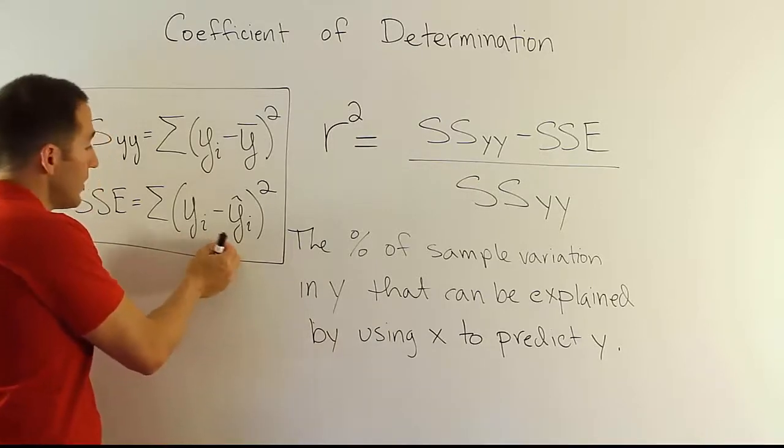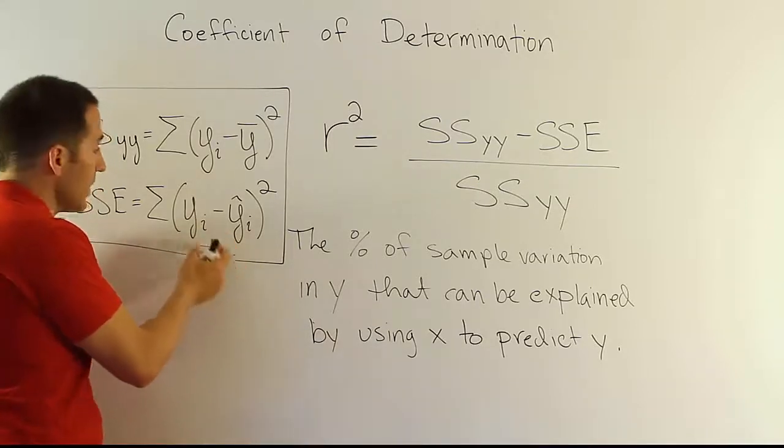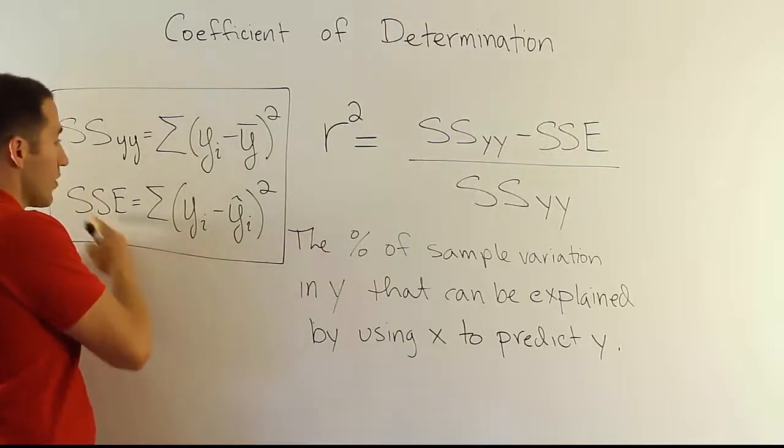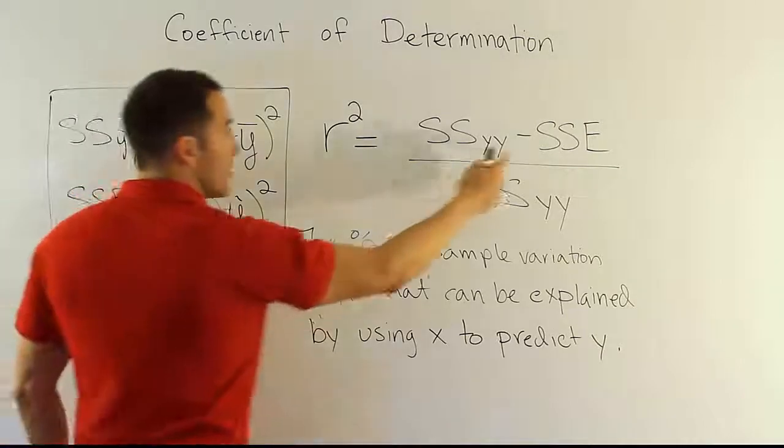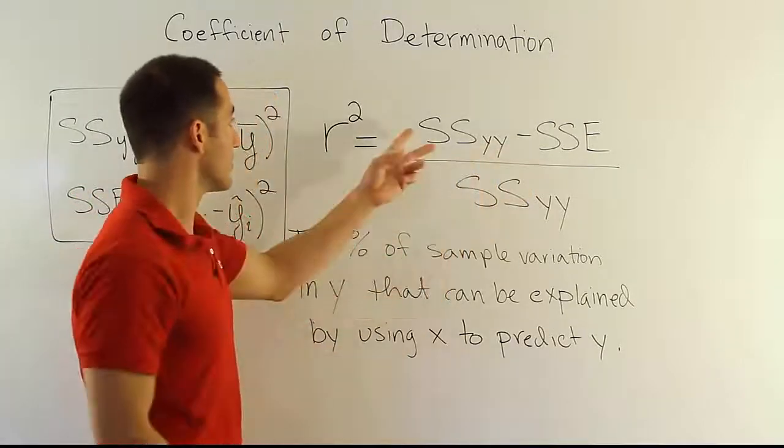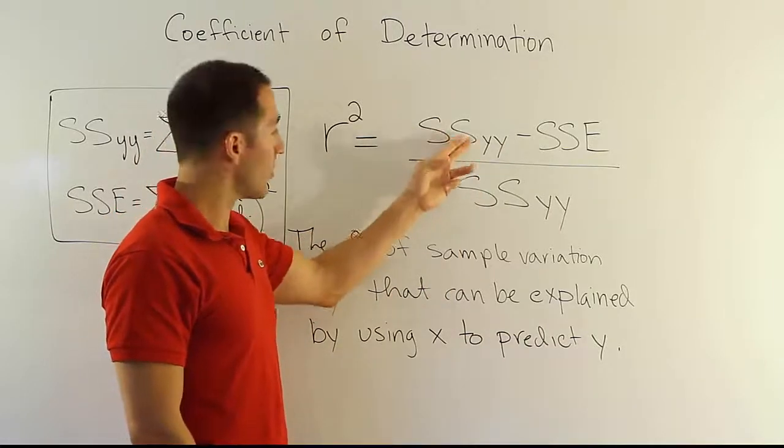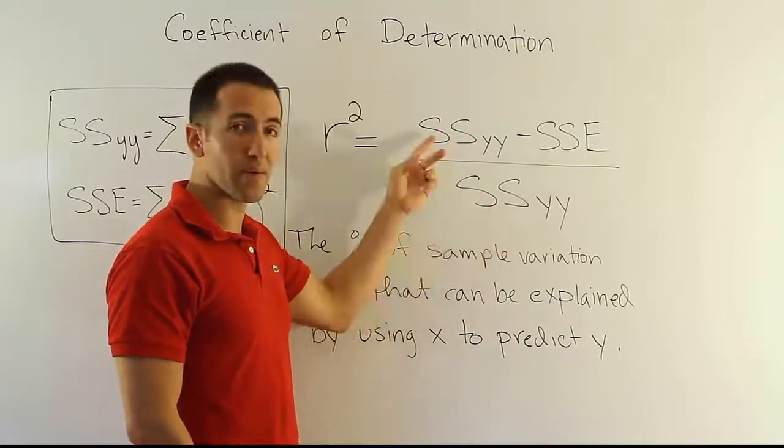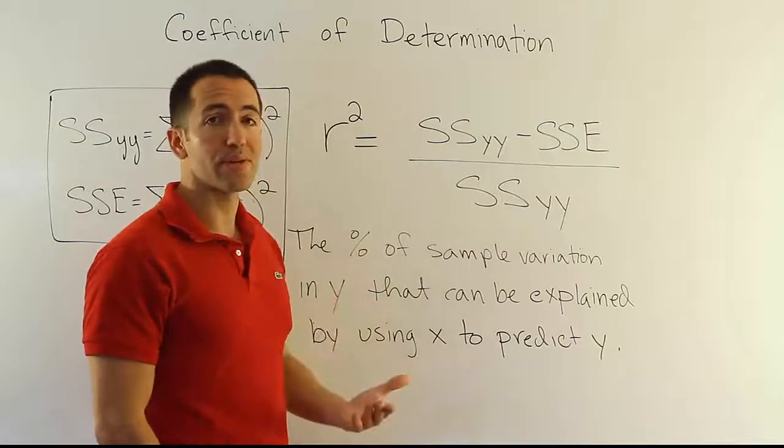It means there's very little error terms, the error terms are tiny. If those error terms are tiny, this overall quantity is tiny, that means the difference between this and this is going to be virtually close to SSYY, divide it by SSYY, and you will end up with a ratio that's close to one. And that would mean that there's a very large percent of variation that can be explained by x in the model.